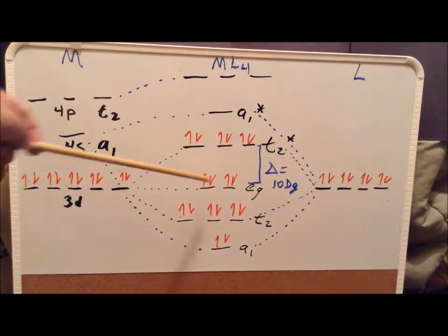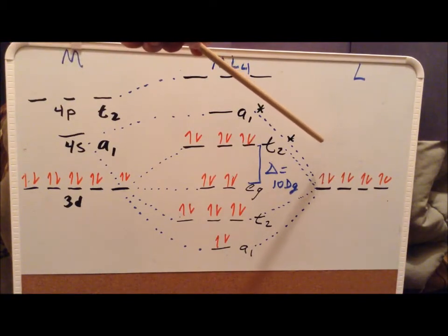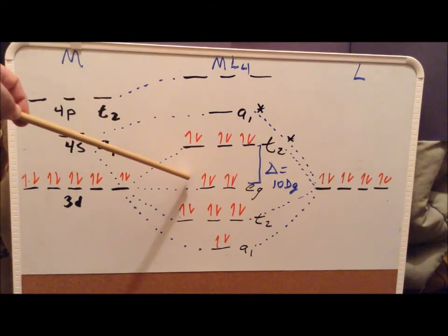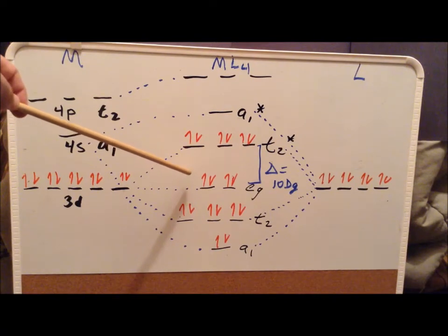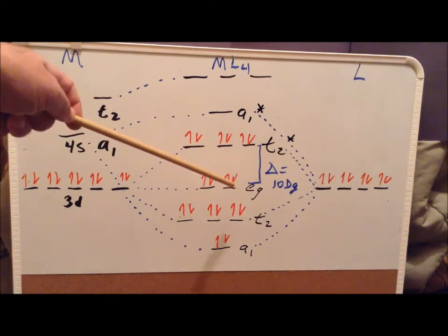There are no EG orbitals from the group orbitals. So those particular d orbitals don't form molecular orbitals. They basically stay on the metal as atomic orbitals. We say that they're non-bonding. So that's the E combination.